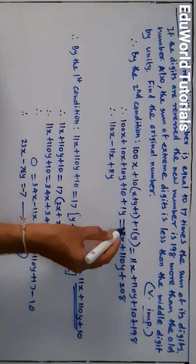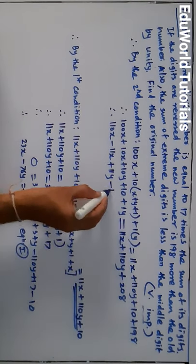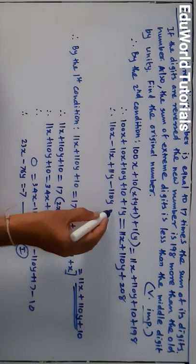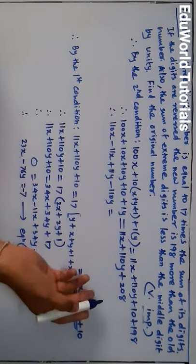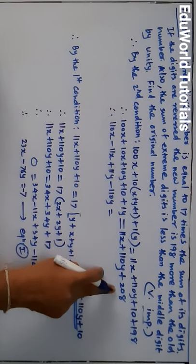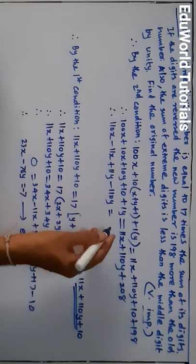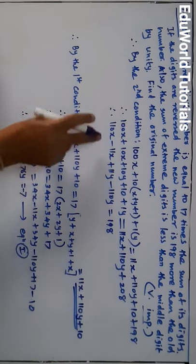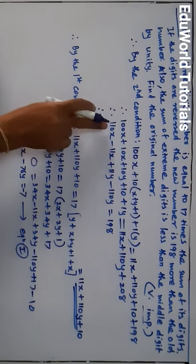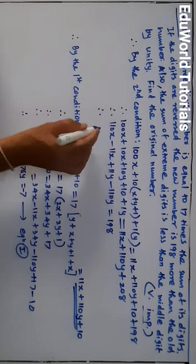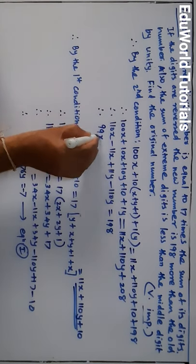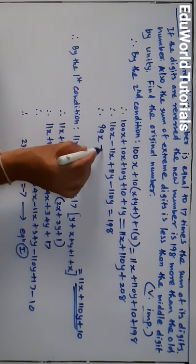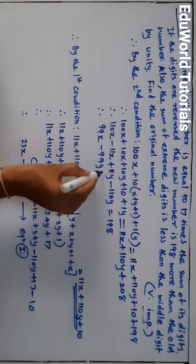10y plus 1y is 11y, and the 110y comes from the right-hand side to the left as minus 110y. The constant 10 goes to the right side where 208 already is; 208 minus 10 is 198. So finally the equation will be: 110x minus 11x is 99x, and 11y minus 110y is minus 99y, which equals 198.